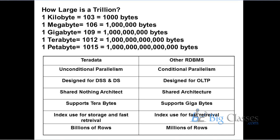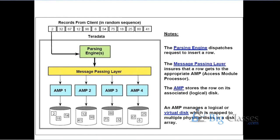The major difference between Teradata architecture and other architectures is shared nothing architecture. What exactly shared nothing architecture means: each AMP is associated with its own disk — AMP 1 with one disk, AMP 2 with another, and so on. The disk associated with AMP 1 will never be shared with any other AMP. Only that AMP can possess that disk's data.